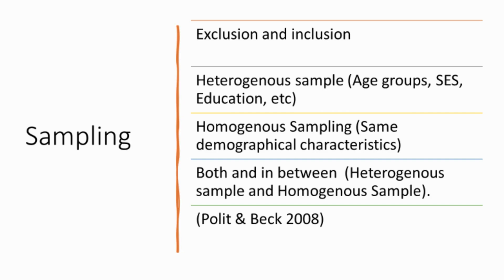Having a heterogeneous sample is a way of obtaining different perspectives related to that particular question. A homogeneous sample, on the other hand, has participants with an in-depth understanding of what the researcher requires, but they all share the same demographic characteristics — same age group, same socioeconomic status, same educational level. Some researchers will also use both methods mixed together.